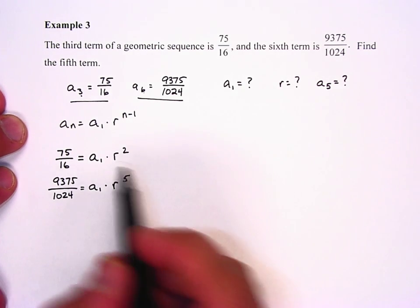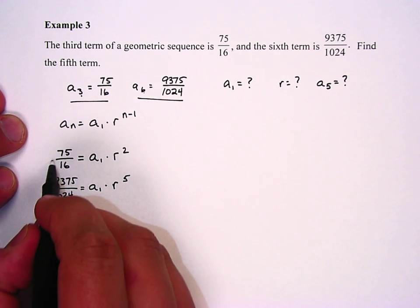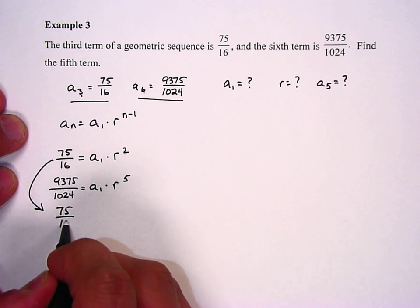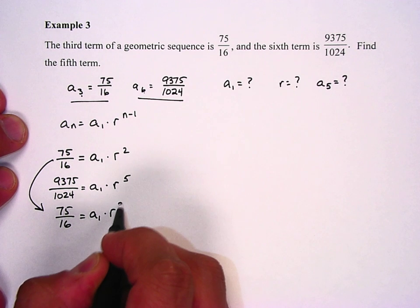Now I should have probably rewritten these. And in fact, I'm going to take this equation and put it below the other one. 75 over 16 equals a sub 1 times r squared.